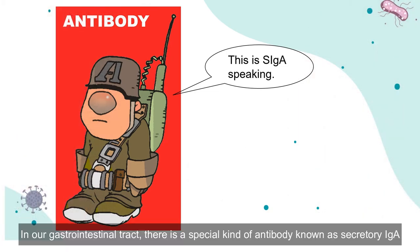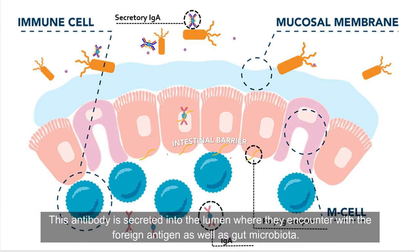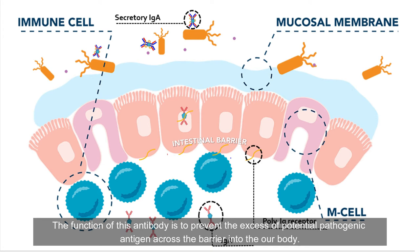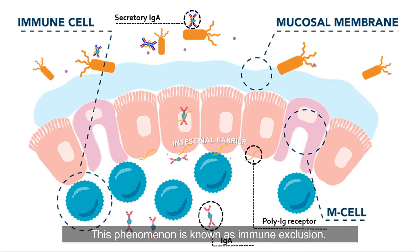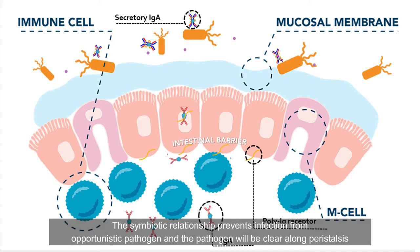Our body has developed tolerance to commensal bacteria as they provide us a lot of benefits, such as food absorption. In our gastrointestinal tract, there is a special kind of antibody known as secretory IgA. This antibody is secreted into the lumen, where it encounters foreign antigens as well as the gut microbiota. Its function is to prevent the access of potentially pathogenic antigens across the barrier into our body — a phenomenon known as immune exclusion. This symbiotic relationship prevents infection from opportunistic pathogens, and pathogens will be cleared along with peristalsis.